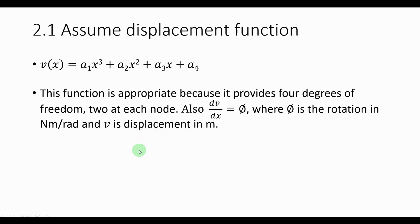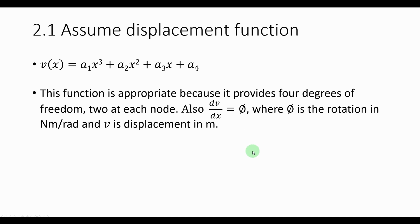Next, we want to assume a displacement function — this is something you just have to know. It is the basic third-degree polynomial, and this function is appropriate because it provides four degrees of freedom at each node, as shown in the previous picture. Also, the derivative of the displacement function with respect to x equals φ, where φ is the rotation in radians and v is the displacement in meters. That is the basic function we will use, and we're going to work with it to derive the coefficients.